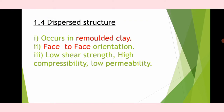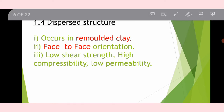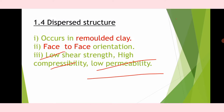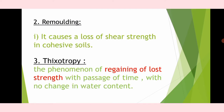Dispersed structure occurs in remoulded clay. The orientation is face-to-face. It exhibits low shear strength, high compressibility, and low permeability.